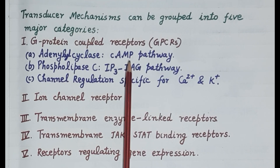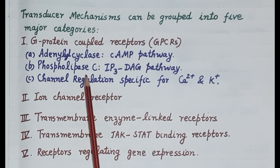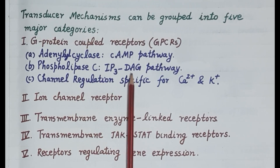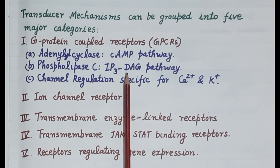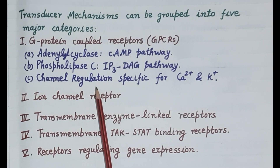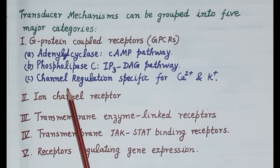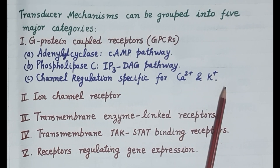Beta adrenergic receptors are G-protein coupled receptors that produce their action via the adenyl cyclase/cyclic AMP pathway. In the phospholipase C pathway, the enzyme phospholipase C is activated, producing inositol triphosphate and diacylglycerol as second messengers — for example, histaminergic H1 receptors act via this pathway. The third pathway involves regulating ion channels: activated G-proteins can open or inhibit calcium and potassium channels to produce the cellular response.